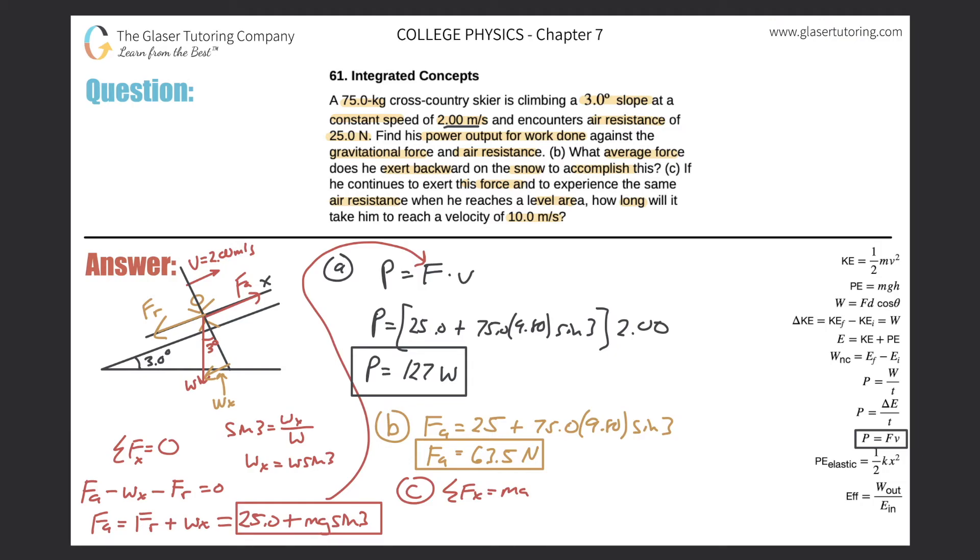So let's actually calculate that acceleration. Alright, so F sub A, we just found out, was 63.5. And we'll subtract from that the force of the wind resistance, which is 25 Newtons. Okay, that should equal MA. So which this is, he's 75 kilograms times A.